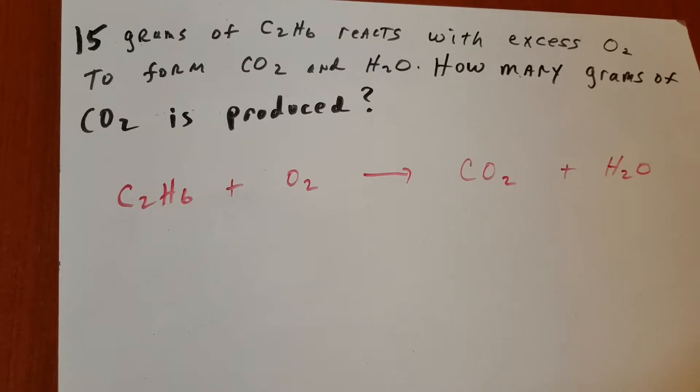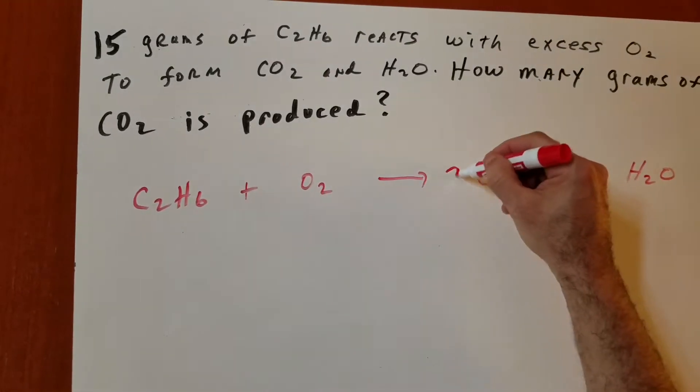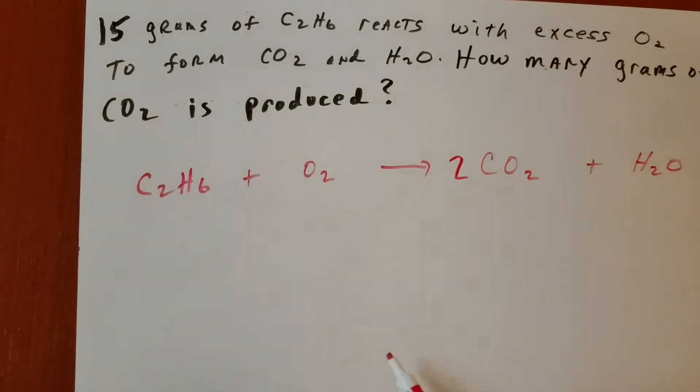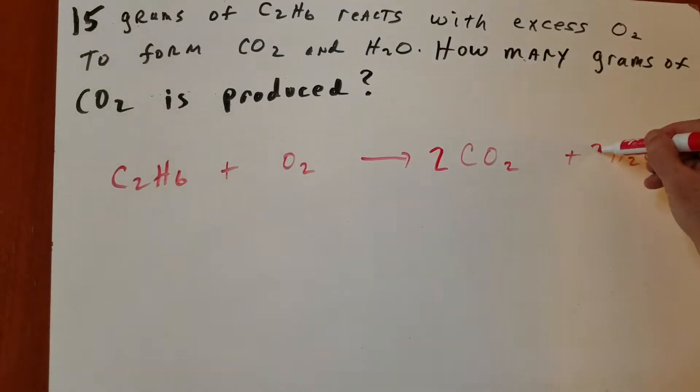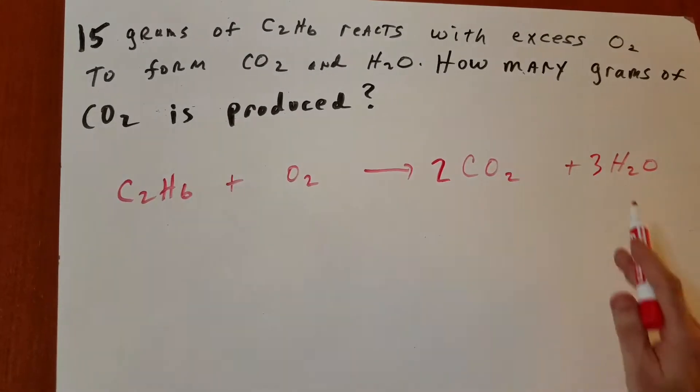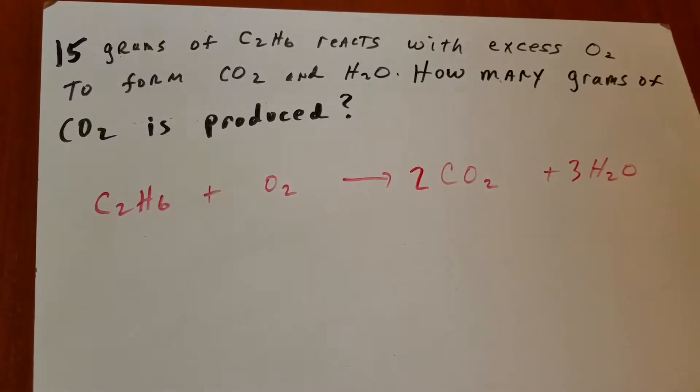Now we always want to make sure the equation is balanced. Two carbons on the left side, and therefore I put a two on the right side to balance the carbons. There are six hydrogens on the left side, and therefore I need to put a three on the right side, because three times two is six hydrogens now on that side.